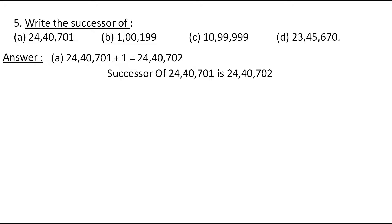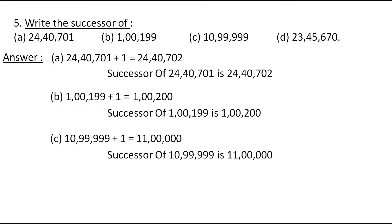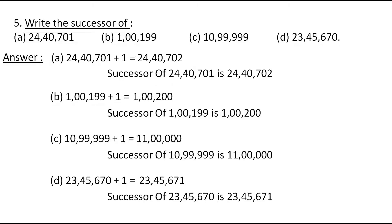The next number is 1,199. Adding 1, we get 1,200. Therefore, the successor of 1,199 is 1,200. The next number is 10,99,999. Adding 1, we get 11,00,000. Therefore, the successor of 10,99,999 is 11,00,000. The next number is 23,45,670. Adding 1, we get 23,45,671. Therefore, the successor of 23,45,670 is 23,45,671.